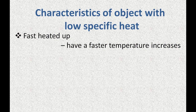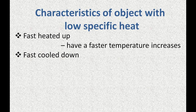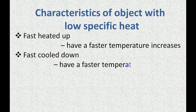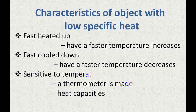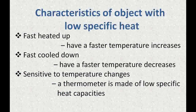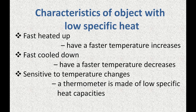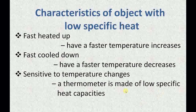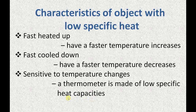Characteristics of an object with low specific heat: it heats up fast, with a faster temperature increase; it cools down fast, with a faster temperature decrease; and it is sensitive to temperature changes. A thermometer is made of low specific heat capacity material.